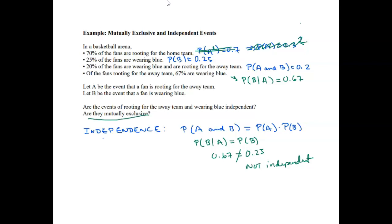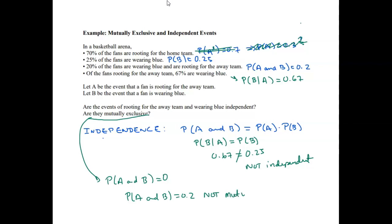Are they mutually exclusive? We check this: if P(A and B) equals 0, then they're mutually exclusive. But we know that P(A and B) is equal to 0.2, so not mutually exclusive.